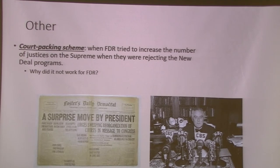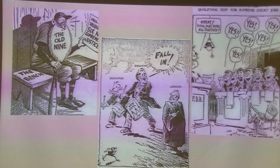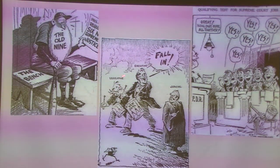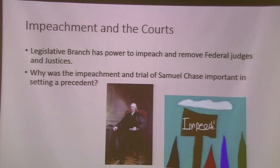It did work for FDR in some ways because after he tried this, the Supreme Court was more willing to let things slide. It shows more of checks and balances — compared to Germany where the government kept giving Hitler more power, Congress would not allow Roosevelt's power grab. A lot of political cartoons from that era show the legislative and executive going one way while the judicial wasn't. Some showed the old nine and then six new Supreme Court justices.